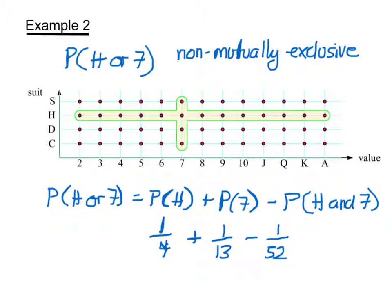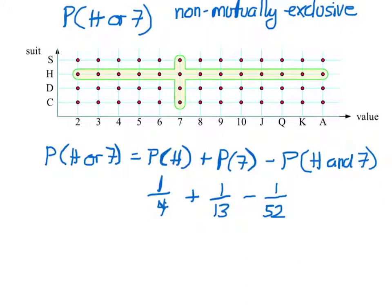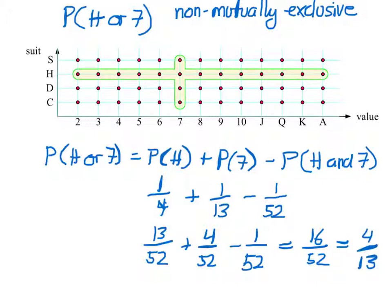If we do a little math here and find some common denominators, we can simplify this expression. Our common denominator is going to be 52, so I'll have 13/52 plus 4/52 minus 1/52, which gets us 16/52, which equals 4/13. And if you want to check your work, you can count the number of dots that are highlighted in the region. We should get 16, and if you count the dots, being careful not to count this dot twice, you should get 16.